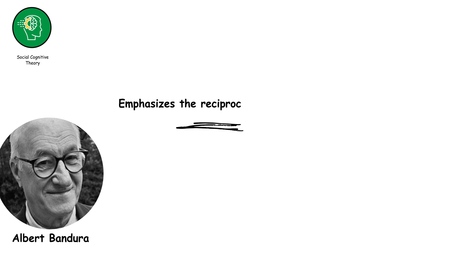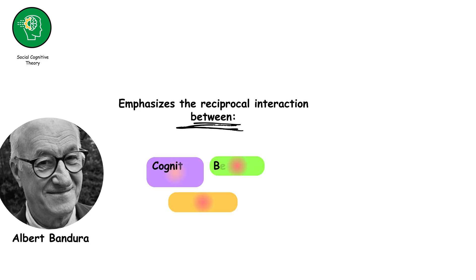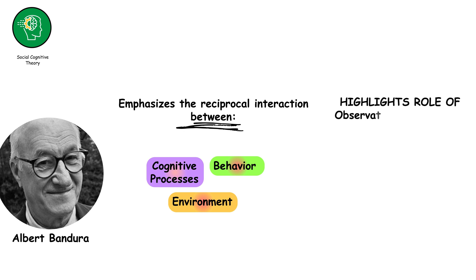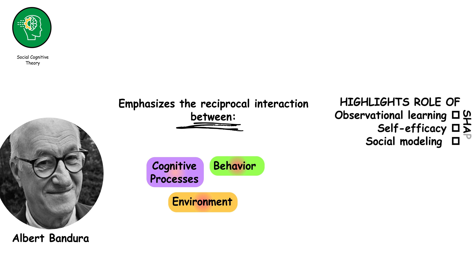Social cognitive theory, proposed by Albert Bandura, emphasizes the reciprocal interaction between cognitive processes, behavior, and the environment. It highlights the role of observational learning, self-efficacy, and social modeling in shaping behavior.